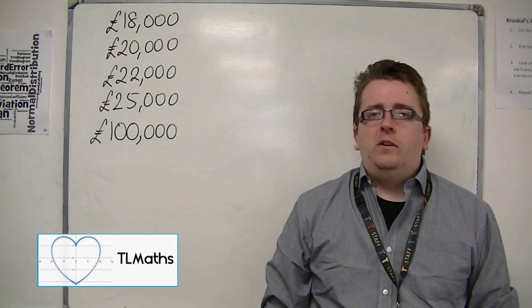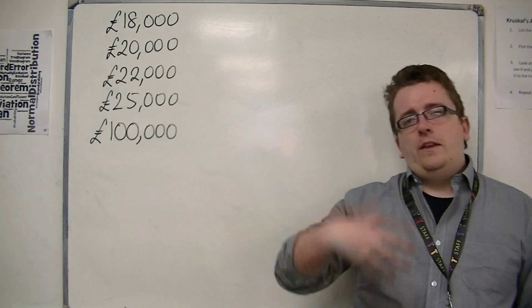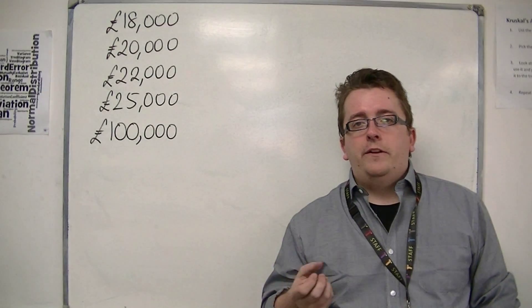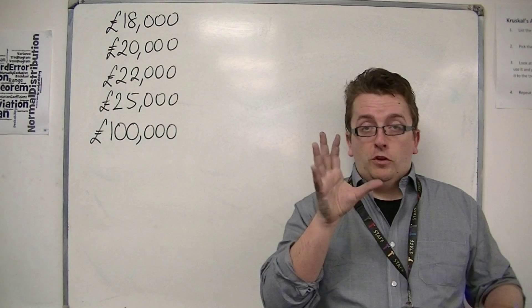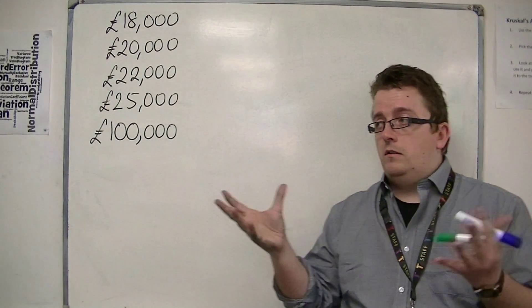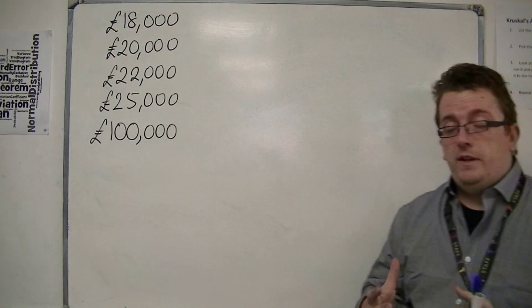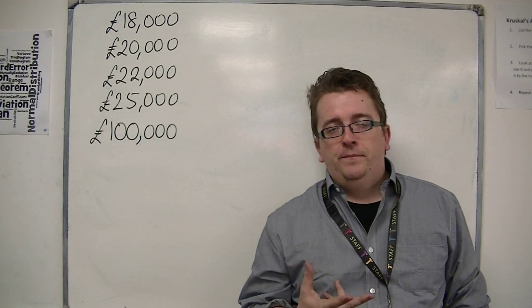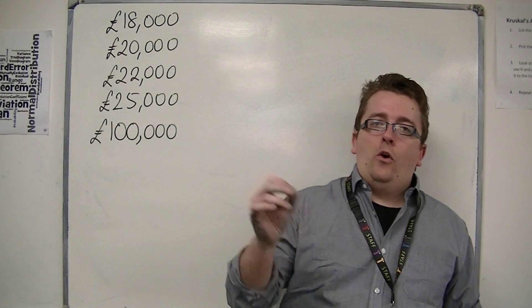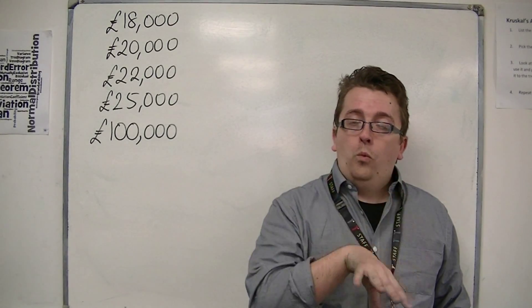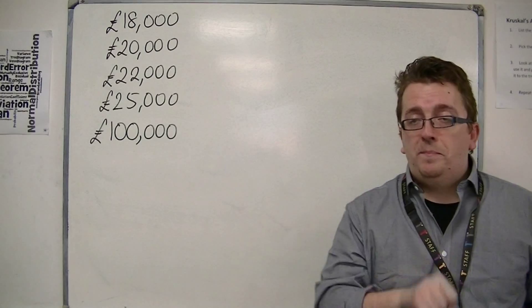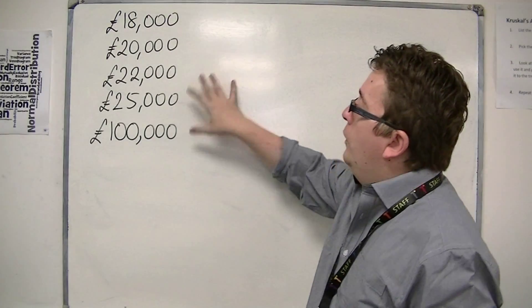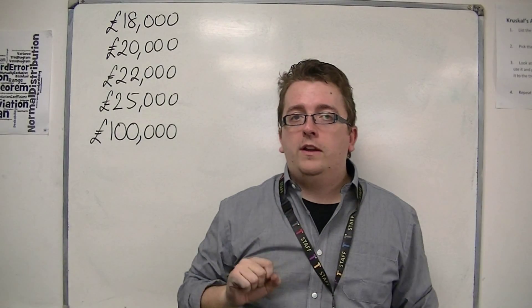In this example, what we're going to look at is a small company. They've got a place that's come vacant, and they need to employ somebody new. In the job advert, they're going to state on average what the annual salary would be. These are the current annual salaries of the five people that work in this company.